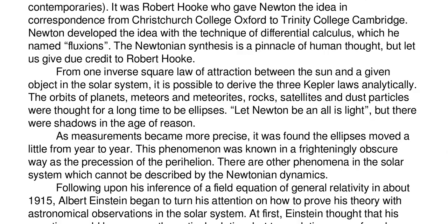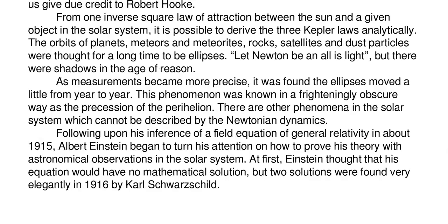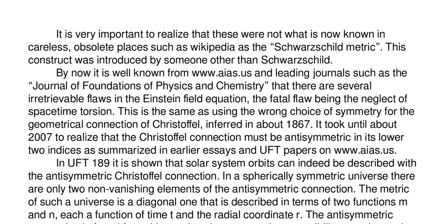There are other phenomena in the solar system which cannot be described by the Newtonian dynamics. Following upon his inference of a field equation of general relativity in about 1915, Albert Einstein began to turn his attention on how to prove his theory with astronomical observations of the solar system. At first Einstein thought that his equation would have no mathematical solution, but two solutions were found very elegantly in 1916 by Karl Schwarzschild. It is very important to realise that these are not what is now known in careless obsolete places such as Wikipedia as the Schwarzschild metric. This concept was introduced by someone other than Schwarzschild.